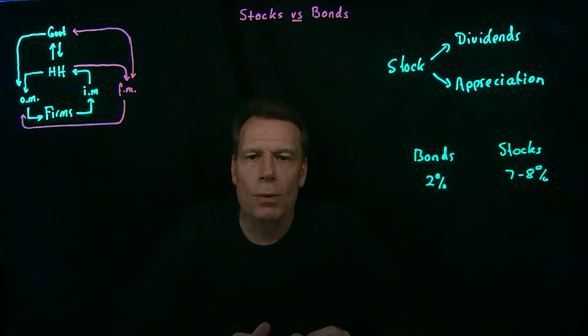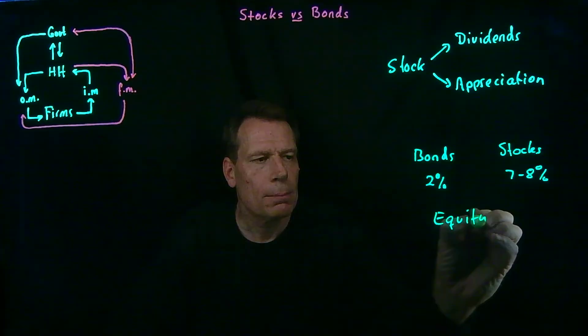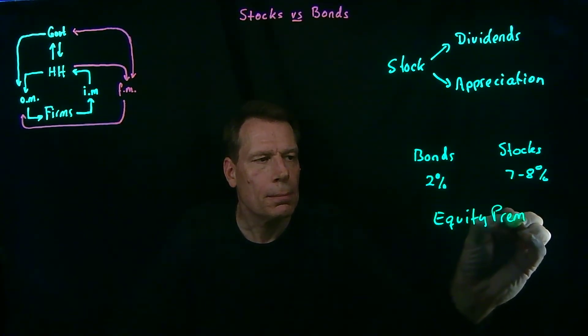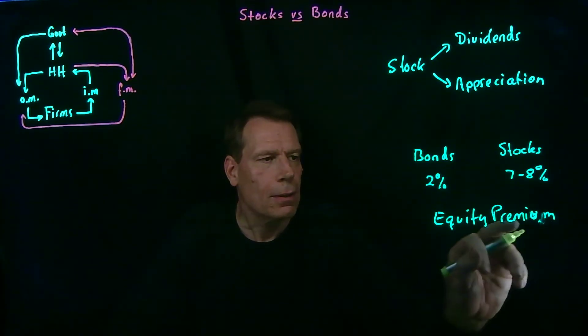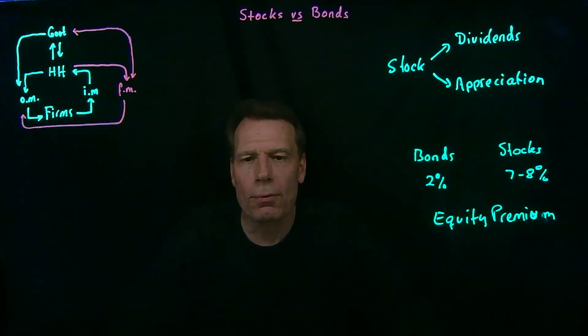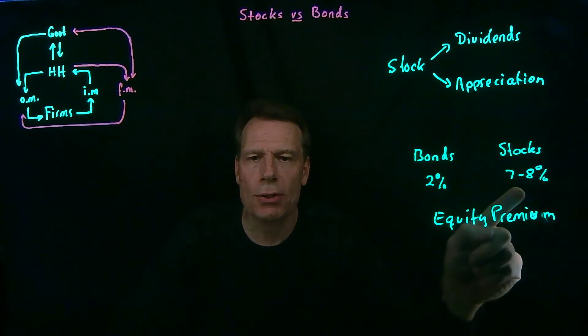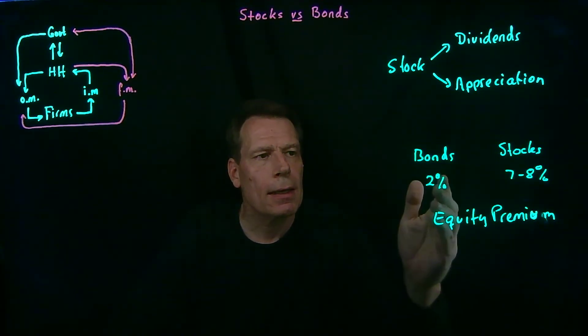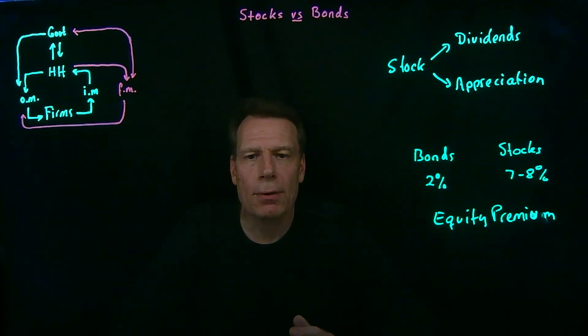So that implies what we call an equity premium. Stocks or equities in corporations - you own part of the corporation - and there's a premium to owning stocks in terms of the expected rate of return. It looks like that premium is about 5% or 6%. In some periods, it's been higher.